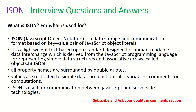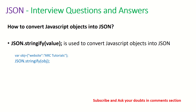JSON is used for communication between JavaScript and server-side technologies. The next question: how do you convert any JavaScript object into a JSON object? To convert any JavaScript object, we use JSON.stringify. That's used for converting JavaScript objects into JSON. As you can see in the example, there is an object with a property 'website' equal to 'ARK Tutorials', and when we call JSON.stringify, it will convert it into a JSON object.